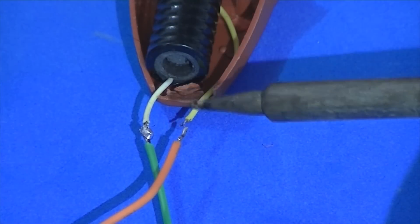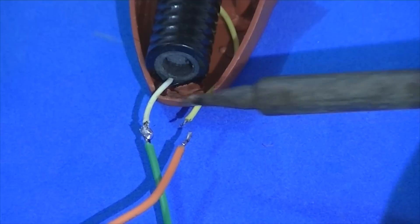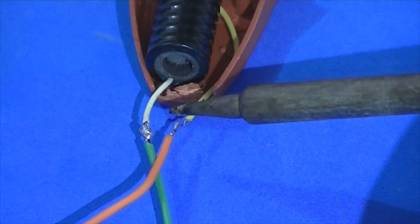Vamos pegar o outro fio da lâmpada e vamos soldar aqui no último fio que sai do circuitinho eletrônico do acendedor.